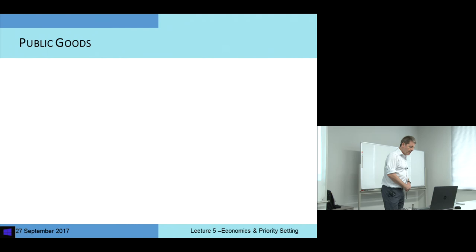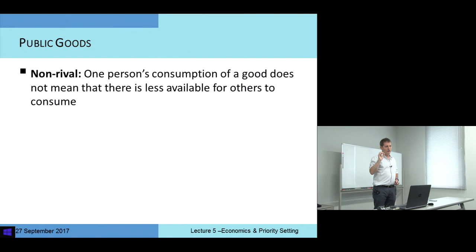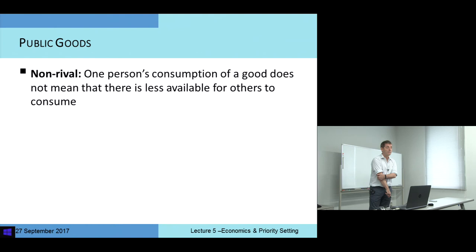Public goods. For economists, public goods have a very specific meaning — two characteristics. A good that is non-rival and non-excludable. If we say something is non-rival, we're saying that one person's consumption of the good doesn't mean there's less available for others.